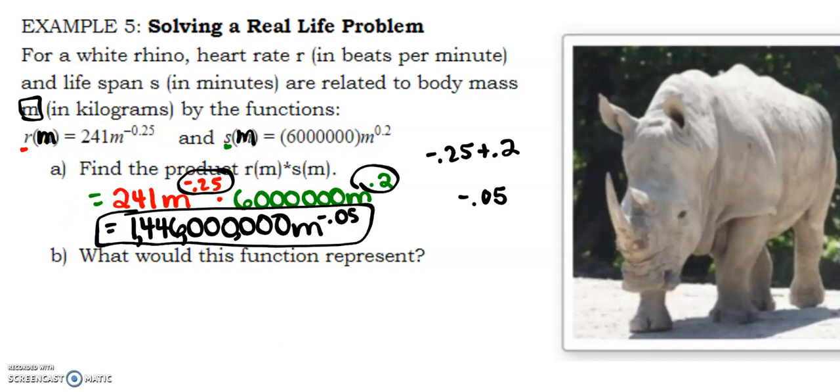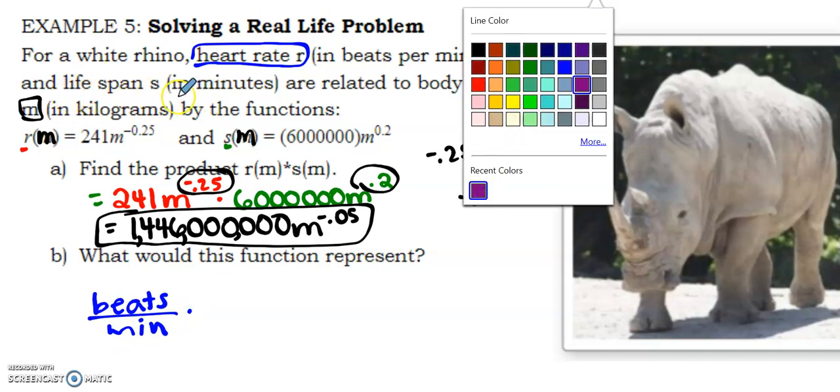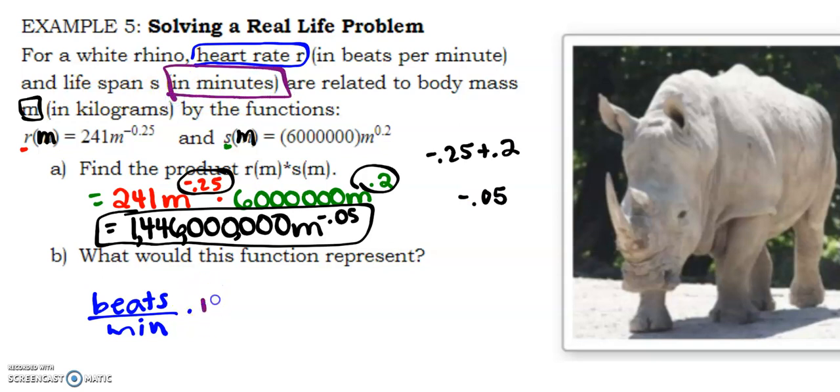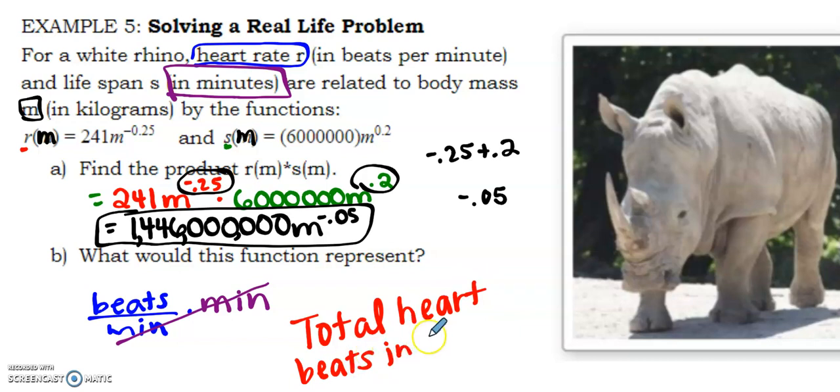Then it says, what would this function represent? So this is where, what's the point in doing a real-world problem if we don't actually think about what it means? R(M) was representing our heart rate in beats per minute. And we multiplied it by a lifespan in minutes. So what we just really found is the total number of heartbeats that a rhino has in their lifetime, based on mass, because M is still our input.